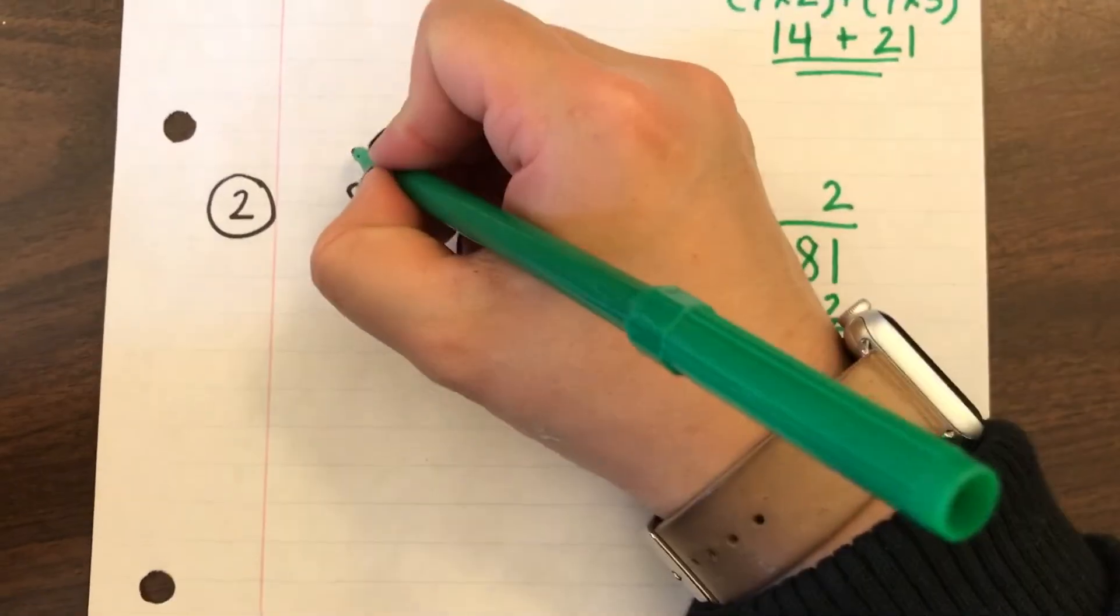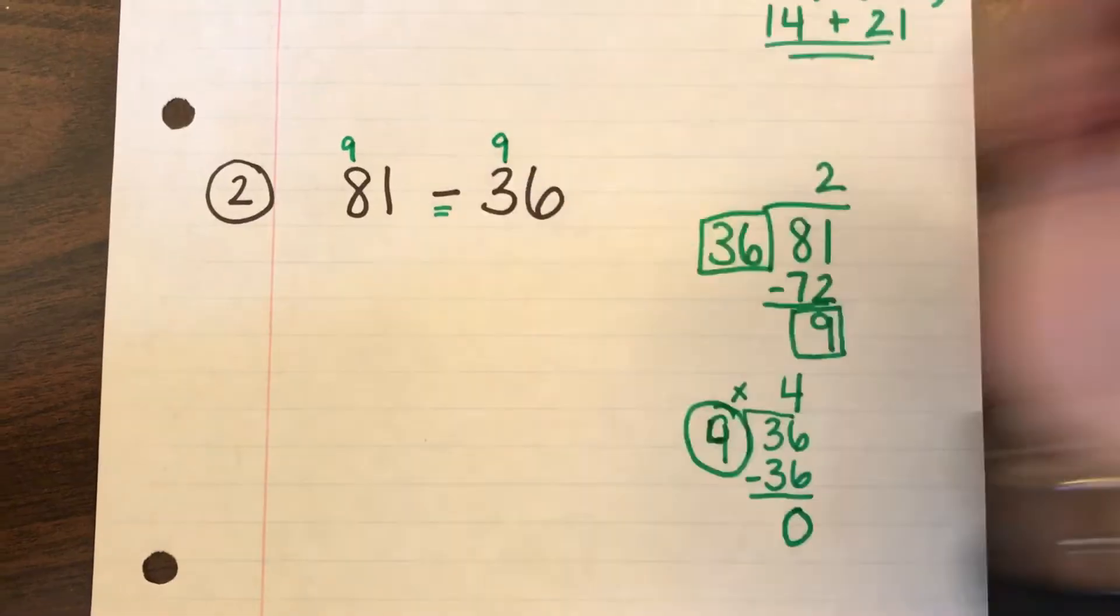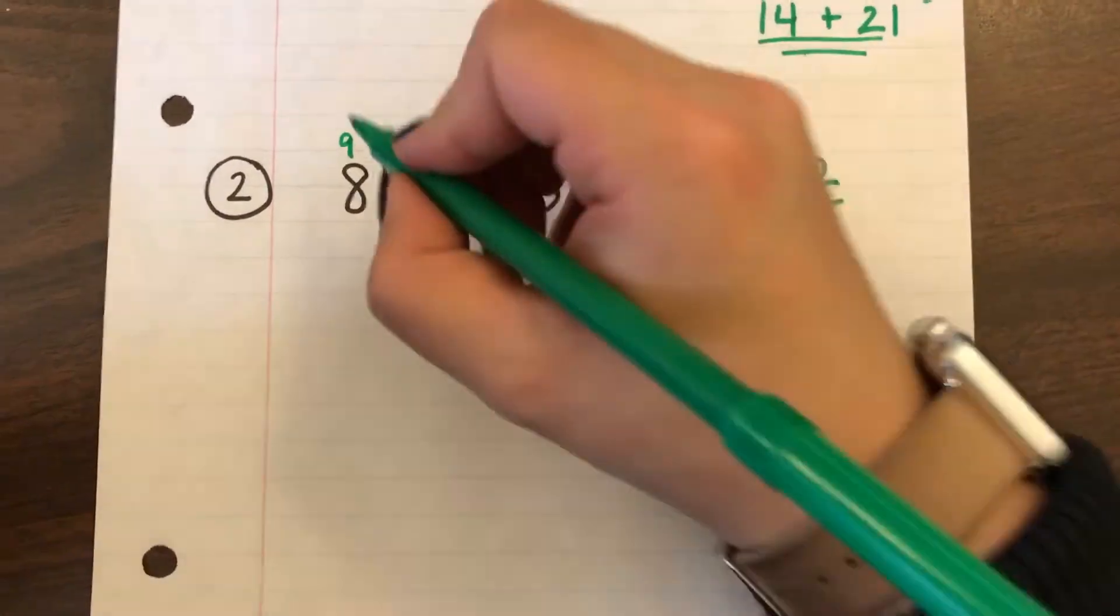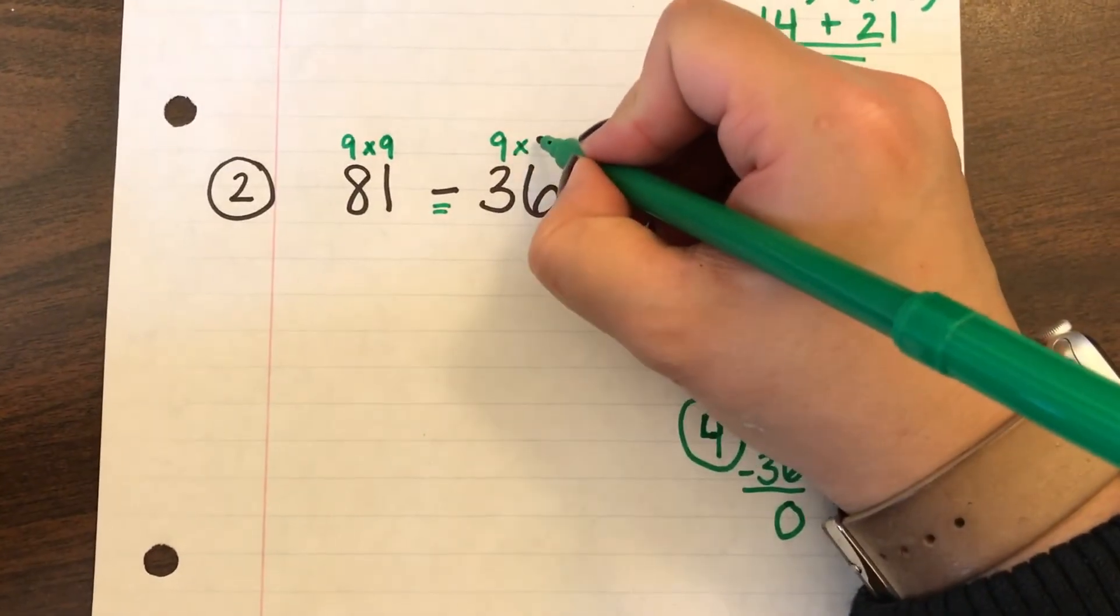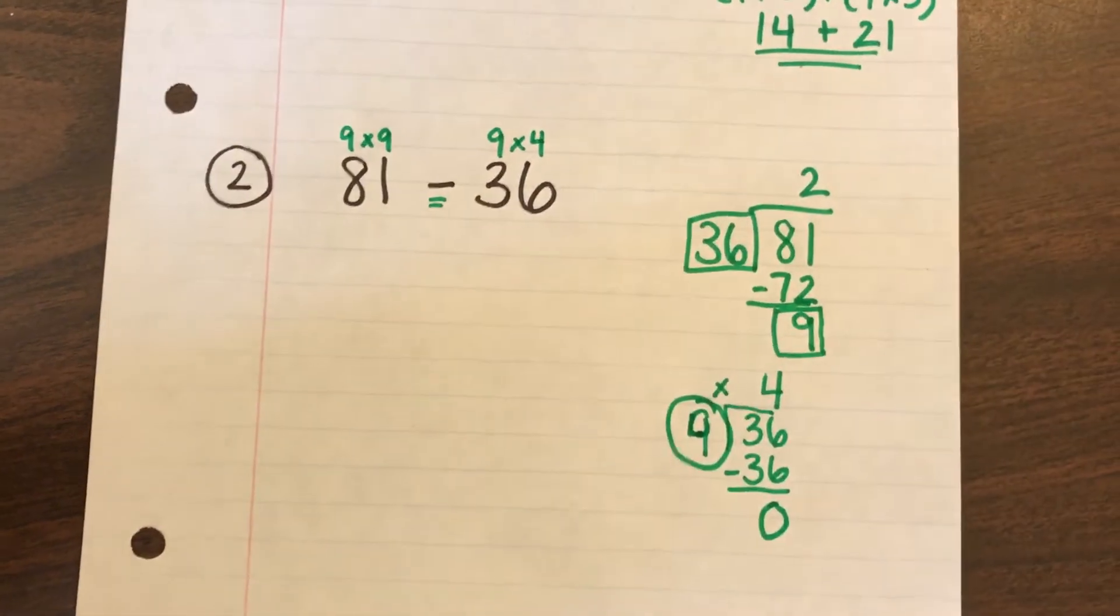Okay so I know that 9 can go into 81 and it can also go into 36. So I know 9 times 9 is 81. And I know 9 times 4 is 36.